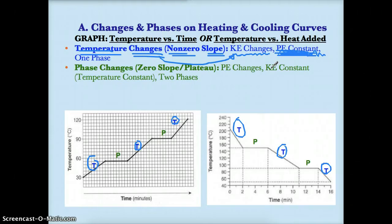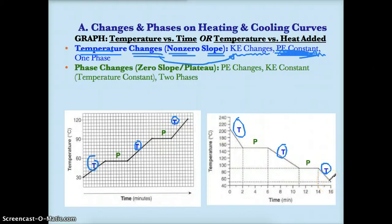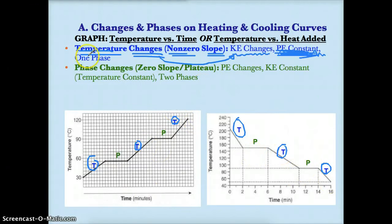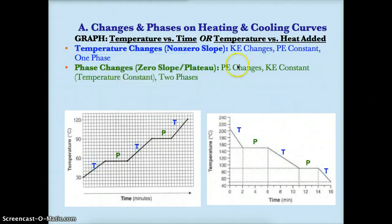Because only temperature is changing, that means you only have one phase. Since there's only one phase, the potential energy during these six lines is constant — because only kinetic energy and temperature are changing. On the other hand, the potential energy is constant because you only have one phase in each of these six blue T regions. What you'll learn is that in a heating curve these are solid, liquid, and gas respectively, while in a cooling curve the order is gas, liquid, and solid.